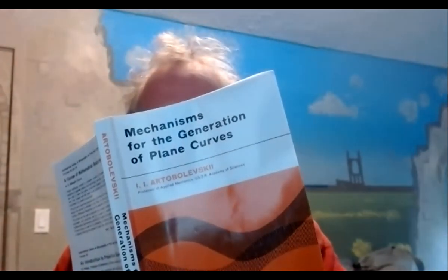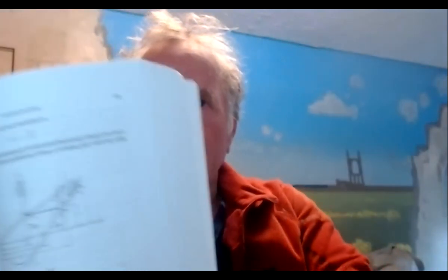We're moving on to parabola drawing mechanisms, working from this book. We're going to do the mechanism of figure 221.